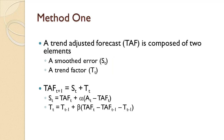With Method 1, a trend adjusted forecast is composed of two elements: a smoothed estimate, or S sub t, and a trend factor, T sub t. The trend adjusted forecast is just the sum of these two components computed in the prior period. The equations are shown on the slide.